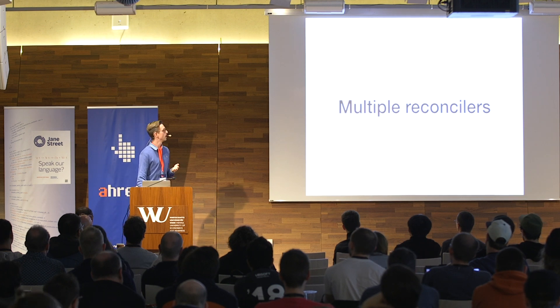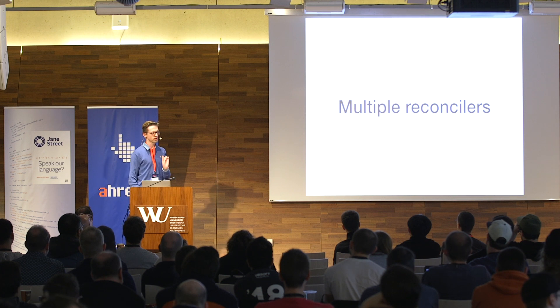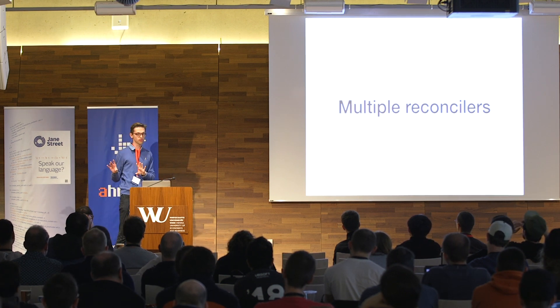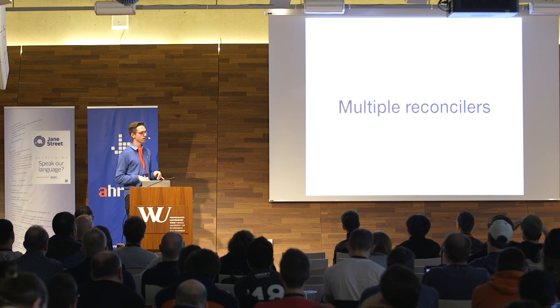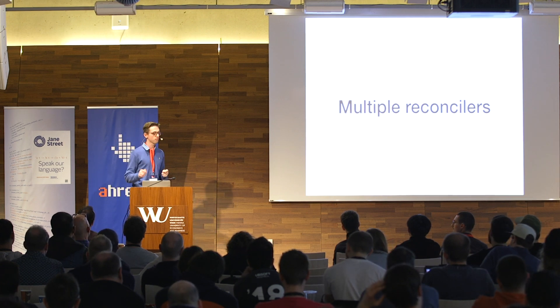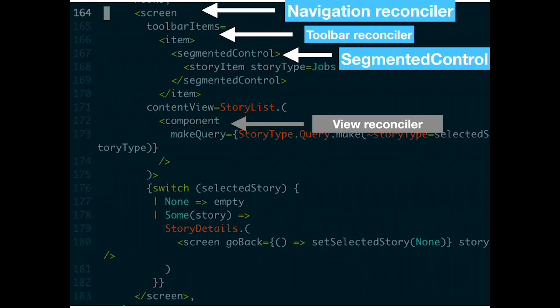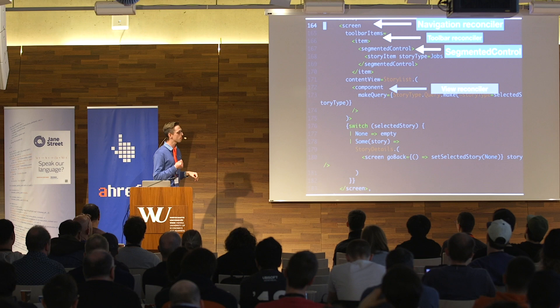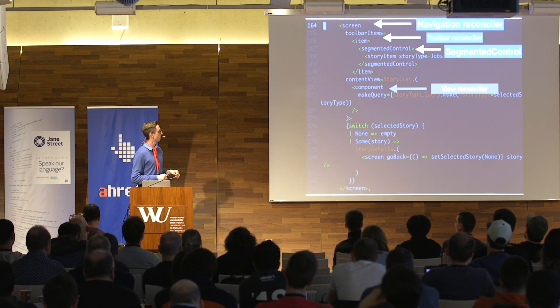What's interesting is that you can have multiple reconcilers in one app. Traditionally with React apps, you use React for view layout, but for navigation or more imperative stuff like menus, you use imperative APIs. With Brisk and Reverie, we can leverage the reconciler to do many different things — we have a navigation reconciler, toolbar reconciler, and segmented control reconciler, which you would normally control with imperative calls, but here you can use a declarative approach.